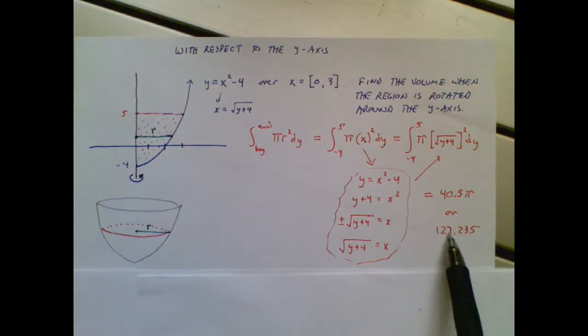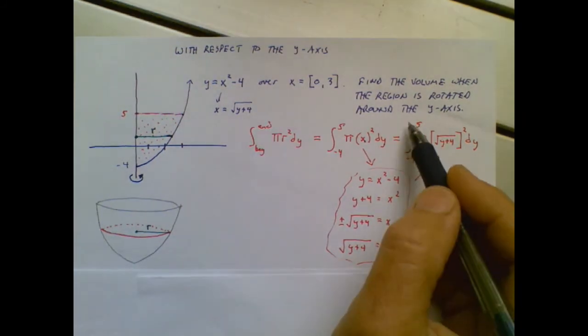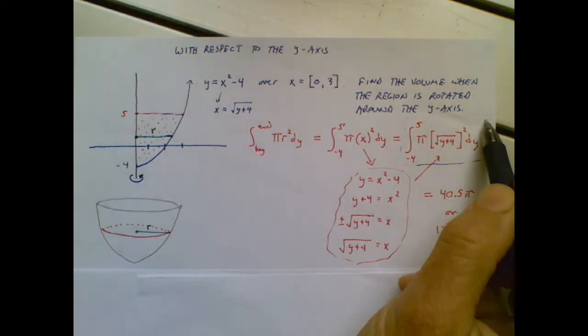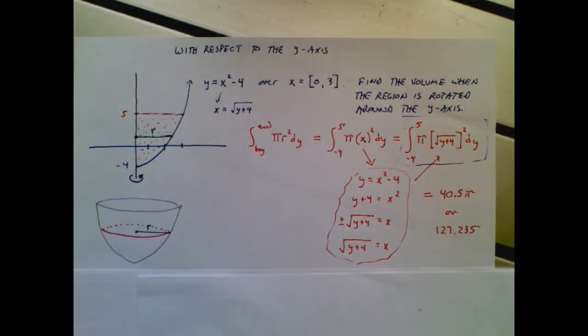But this integral tells me the volume of this figure. The AP might ask you for an actual number or they might ask you to stop at the integral stage. So this one was with respect to the y-axis or rotated around the y-axis. The previous one was with respect to the x-axis. I'm going to show you one more problem. And in this case, the radius is going to be troublesome. That's foreshadowing.